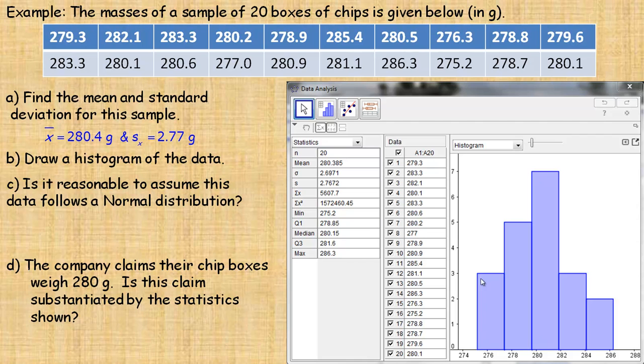And so it says draw a histogram of the data, there's the histogram of the data. And it certainly looks relatively symmetrical about the middle. So it would be reasonable to assume we could use the normal here.